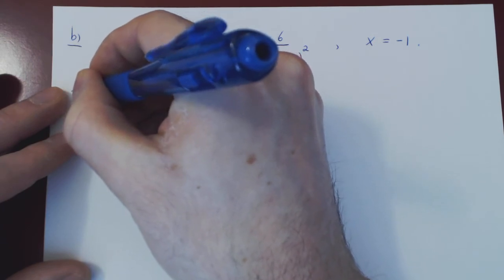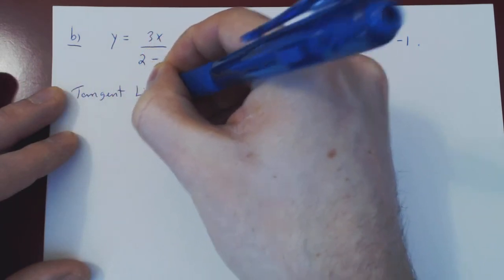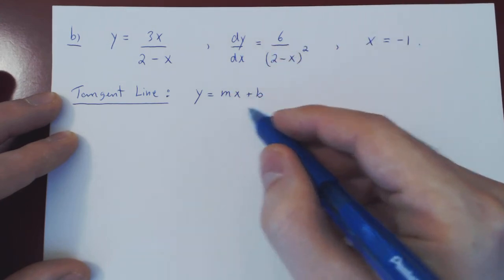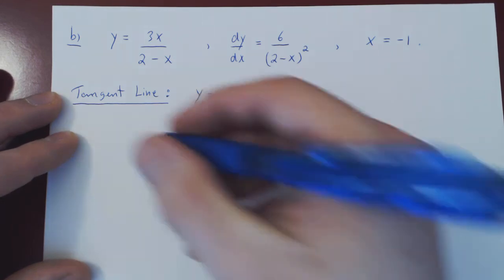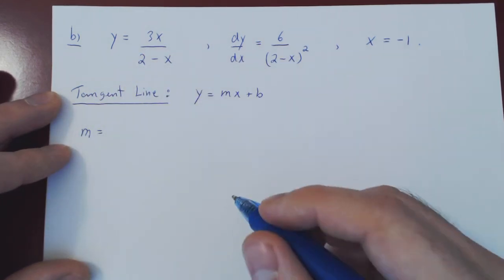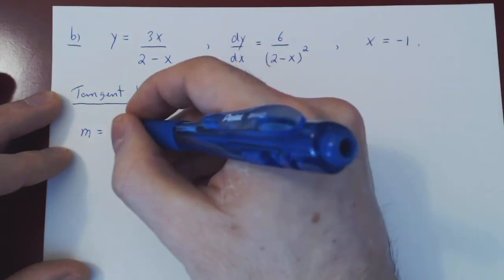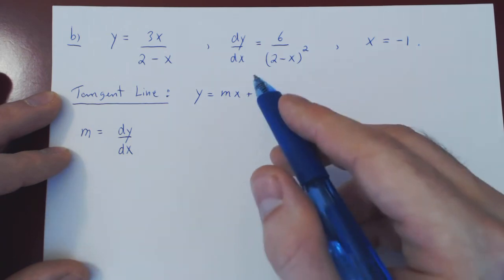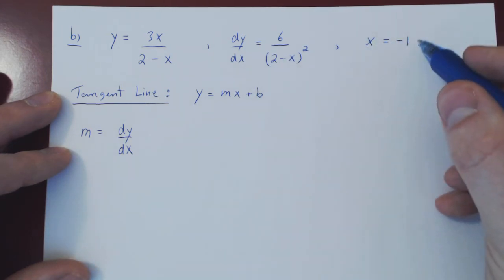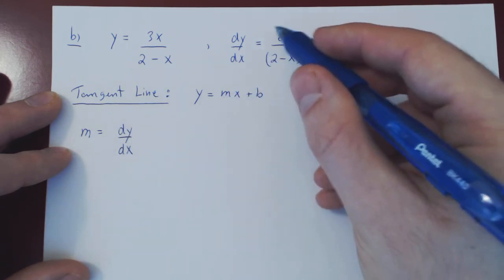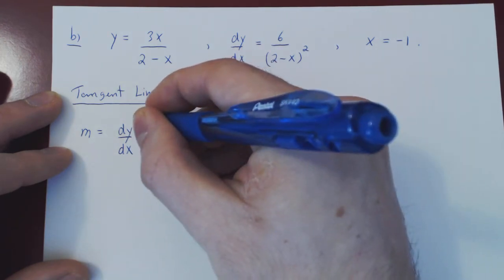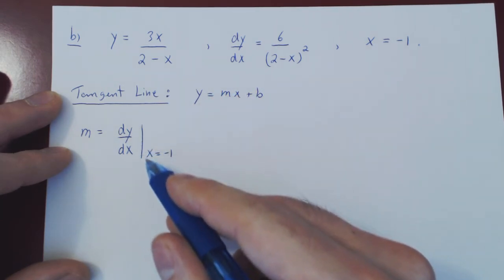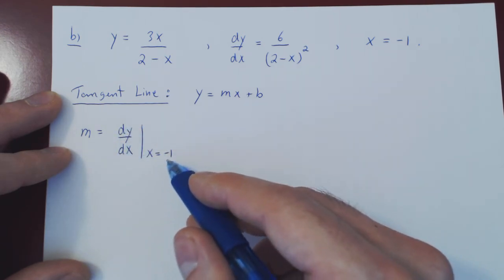A tangent line is a line, so its equation is y equals mx plus b, where m is the slope and b is the y-intercept. As always, we find the slope — m is the slope of the tangent line, but by definition the slope of the tangent line is the derivative. So m is the derivative dy over dx, but we don't want the slope at any given value of x; we want the slope specifically when x equals negative 1. So we have to evaluate our derivative at x equals negative 1, and we signify this by using a vertical bar with x equals negative 1. This means evaluate the function of x at x equals negative 1.